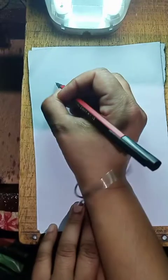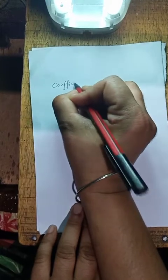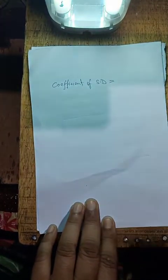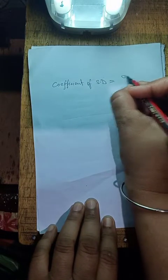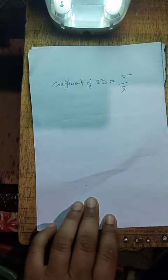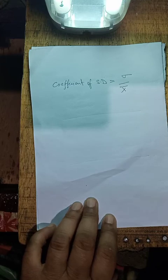Standard Deviation calculate करने के बाद हम coefficient of standard deviation निकाल सकते हैं। Coefficient of standard deviation निकालने के लिए standard deviation को mean के साथ divide किया जाता है — SD / mean — तो हमारे पास coefficient of standard deviation आ जाएगा।